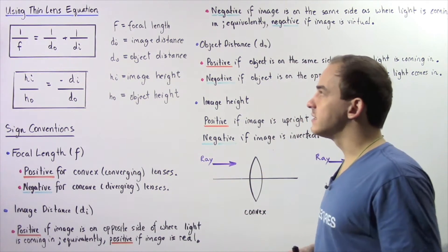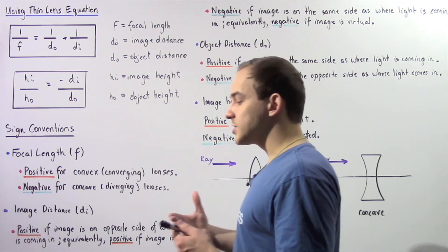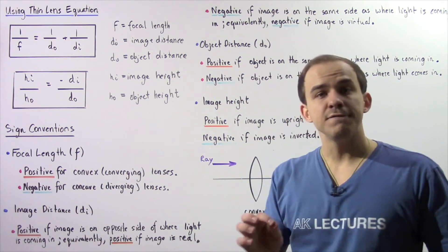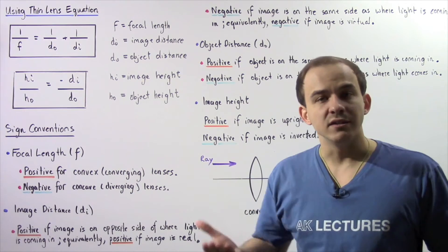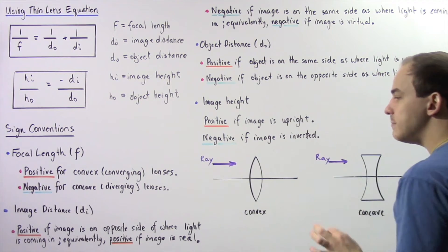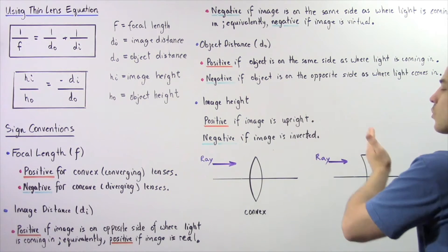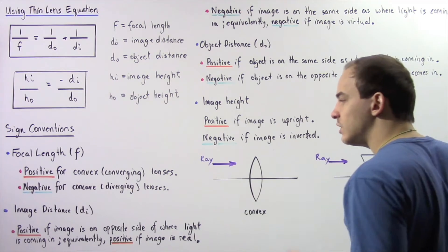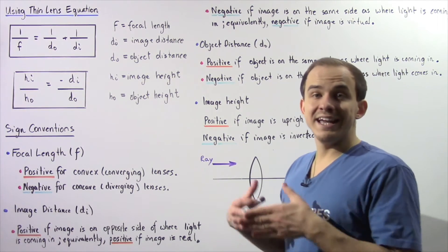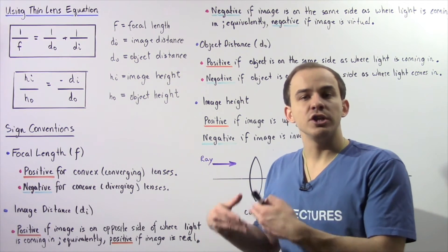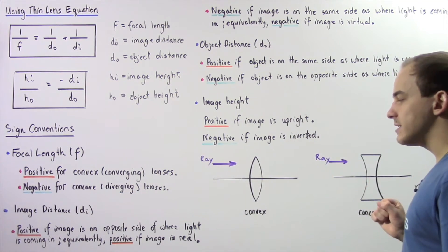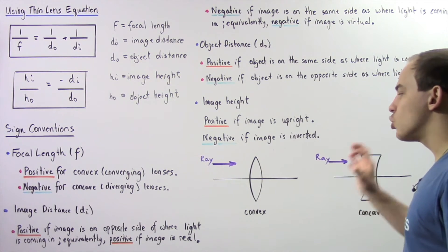Now let's move on to the image distance di. The image distance is the distance from the center of our lens to where our image is actually formed. The image distance is positive if the image is on the opposite side from where the light is coming from — since our light is coming from the left, di is positive if the image is formed on the right side of the lens. Equivalently, di is positive if the image is real, meaning the rays of light actually pass through it.